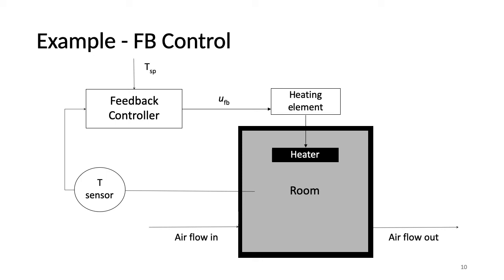This is an example of applying feedback control on a room heating system. The purpose of the controller is to control the inside temperature of the room. Cold air flowing in due to ventilation causes the inside temperature to drop below requirements. The feedback control loop measures the inside temperature as the controlled variable, takes the desired inside temperature as the set point, calculates the error, and generates a control signal that acts on the heating element of the electrical heater to control the electrical power supply — causing an increase or decrease in supplied heat to the room.